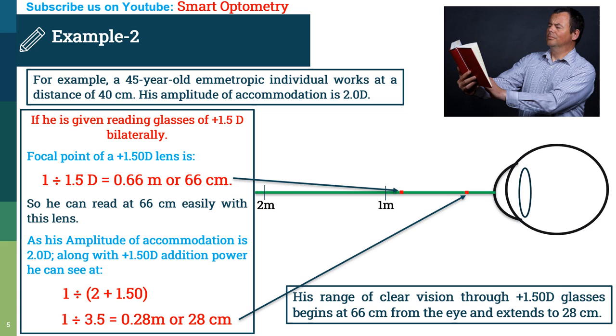His range of clear vision through plus 1.5 diopter glasses begins at 66 cm from the eye and extends to 28 cm. So, his range for near work is only 38 cm in which he can see clearly, which is very less as compared with addition power plus 0.75 diopter.